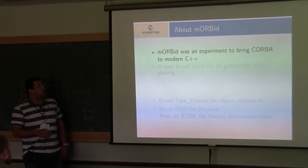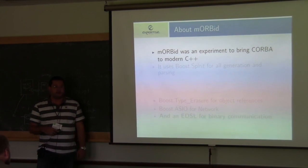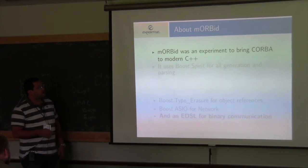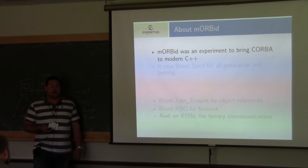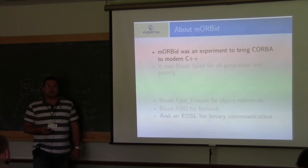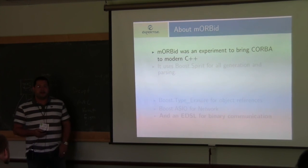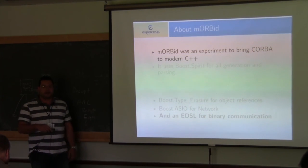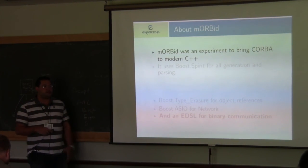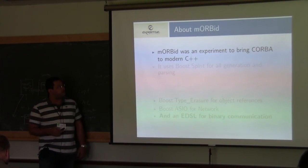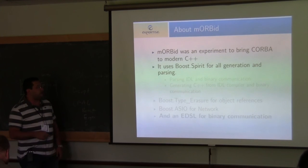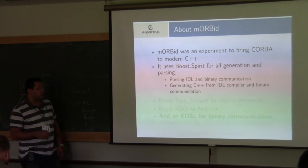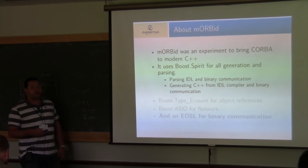The DSL I'm going to talk about has been developed in a library called Morbid, which was an experiment to bring CORBA to modern C++. CORBA is a very old protocol and API for distributed systems development. We tried to use modern C++ to create a library for CORBA development, and it uses Boost Spirit for all generation and parsing — from parsing IDL and binary communication to generating C++ from the IDL compiler.